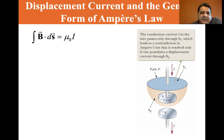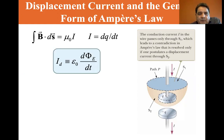So B dot dS equals mu zero, permeability, times I. And I is equal to dQ/dt, the change in charge over time. The displacement current that Maxwell formulated is defined as the permittivity epsilon zero times the change in the electric flux, dΦ/dt.